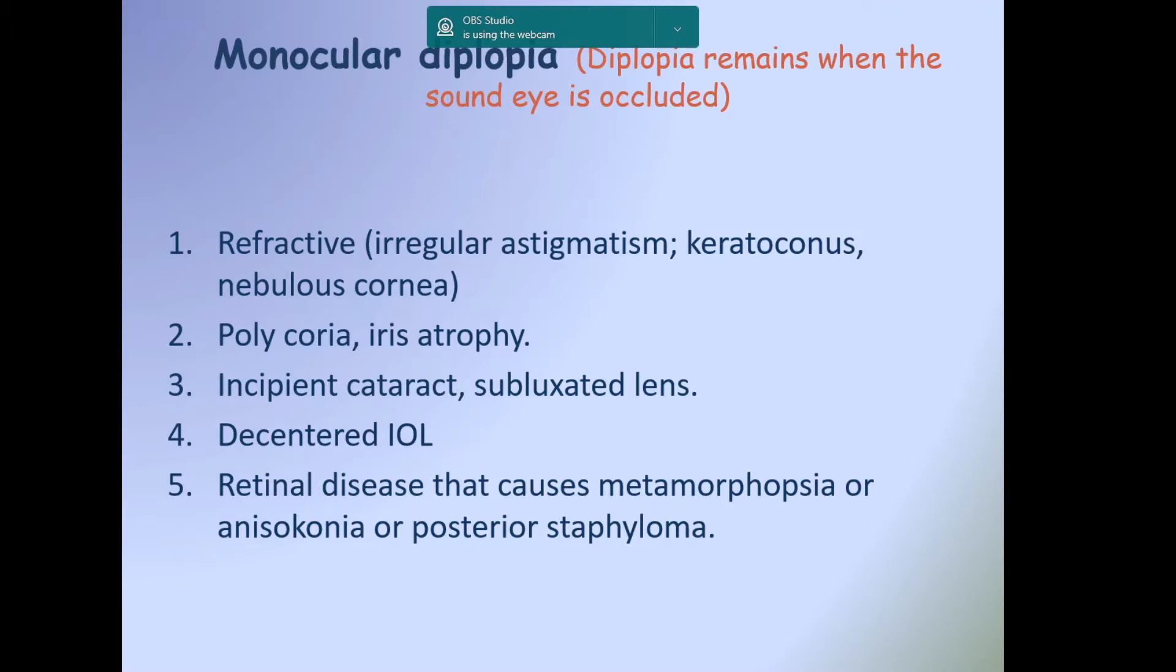Diplopia by definition is a simultaneous perception of two images of the same object. The definition of monocular diplopia is diplopia which remains when the sound eye is occluded. If you find a cause for monocular diplopia, then stop searching for other neurological causes.